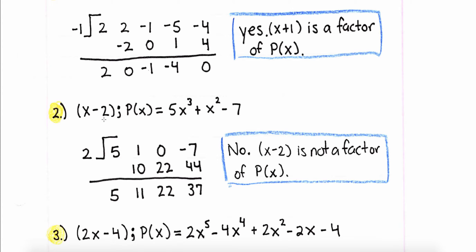I want to demonstrate if x minus two is a factor of the polynomial. What is the zero, or the root of x minus two? It's two. Write out the coefficients — I have to include a zero here because there's an x to the first term missing. Drop the five. Two times five is ten, I add and get eleven. Two times eleven is twenty-two, I add and get twenty-two. Two times twenty-two is forty-four, I add and get thirty-seven. I did not get zero, so x minus two is not a factor of P of x.